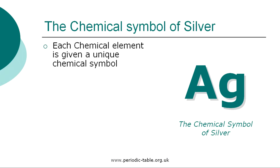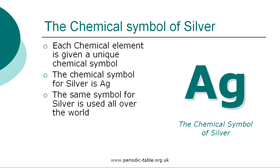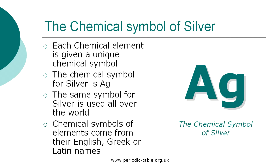Each chemical element is given a unique chemical symbol which is used all over the world. The chemical symbol for silver is AG. The chemical symbols of elements come from their English, Greek, or Latin names. The first letter of a symbol is always a capital letter, and if there are any subsequent letters, they are expressed in lowercase.